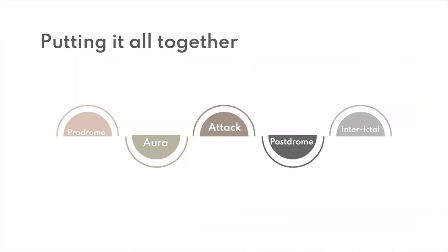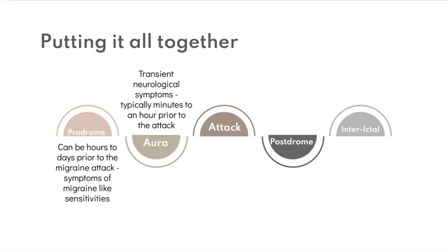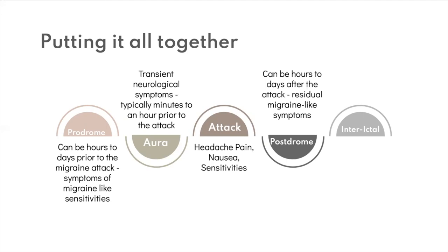Let's put it all together. Before the migraine attack there is a prodrome — symptoms like sensitivities that people notice hours, even days before the actual attack. Aura can occur in people with migraine with aura — those transient neurological symptoms, typically never longer than 45 minutes to an hour, oftentimes just minutes. The attack itself is where there's the pain, the sensitivities, and GI symptoms like nausea and vomiting. And then there's oftentimes a post-drome — residual symptoms lasting hours to days after the attack.